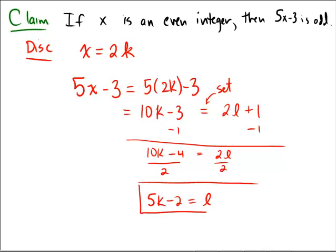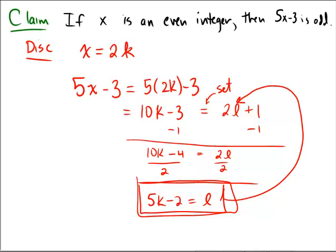So now we've actually found the l that we can substitute into this expression and it's certainly an integer because we're saying that k is an integer. And this would establish that 5x minus 3 is odd. So we've found what we need to use in order to show the consequence of this statement under the assumption of the hypothesis.